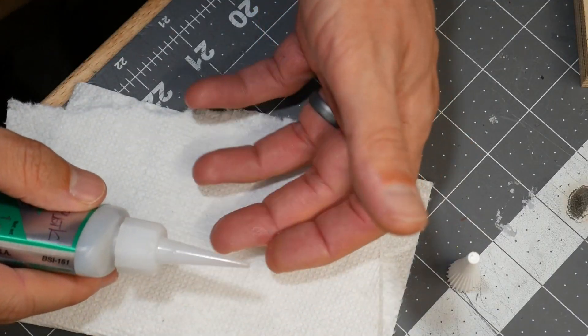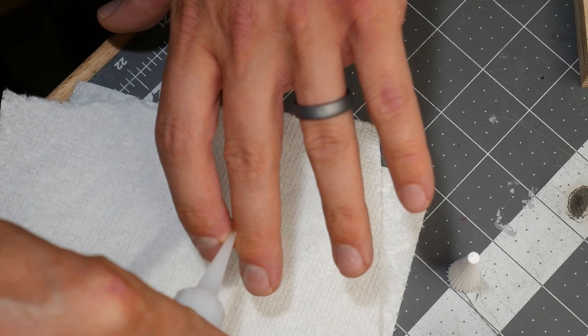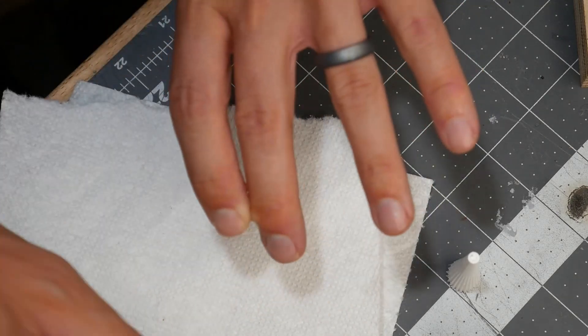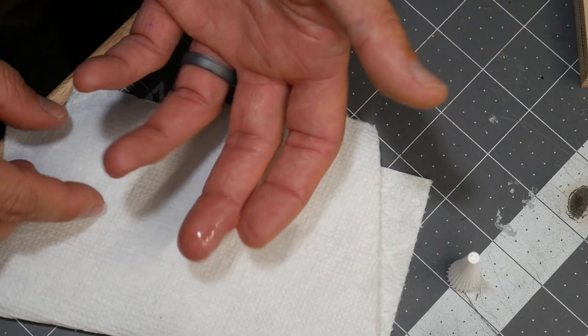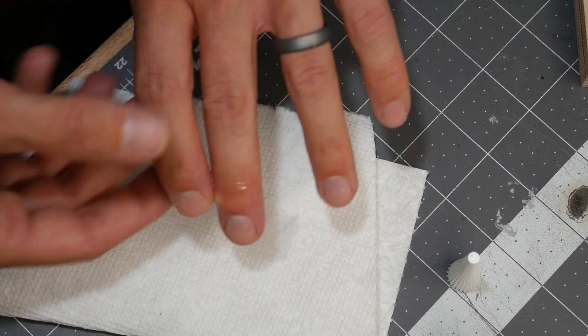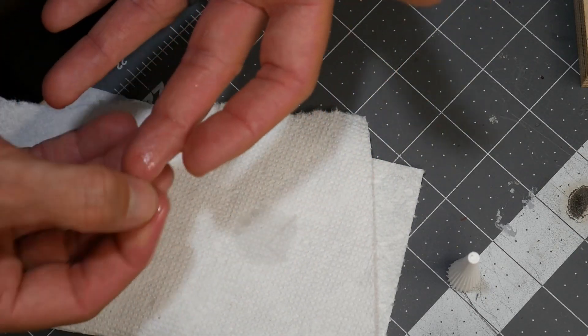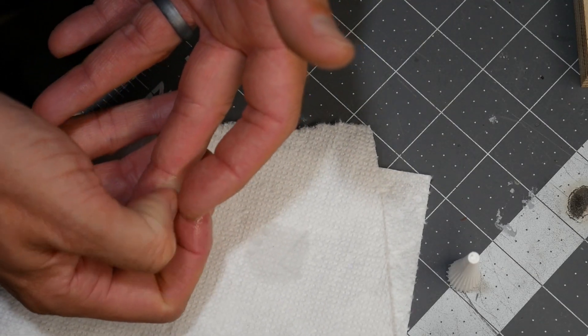I happen to have a bottle of super glue debonder handy, so I used that to try to unstick my fingers. Just slowly work whatever solution you're using into the area that is affected by the super glue and then just gently try to pry it apart. Don't try to rip or you'll tear your skin and that's a bad place to be. But eventually it came undone.